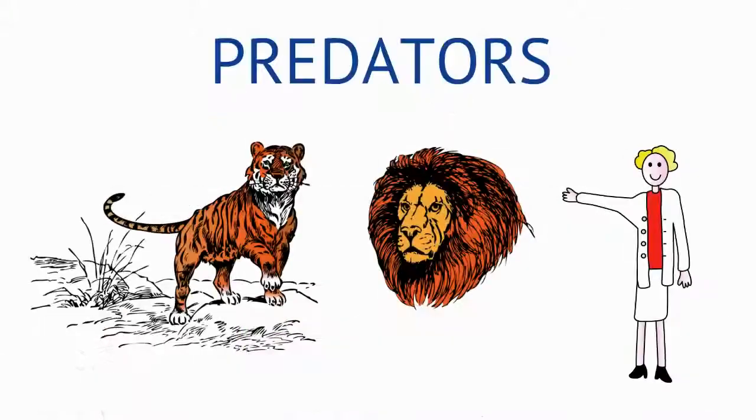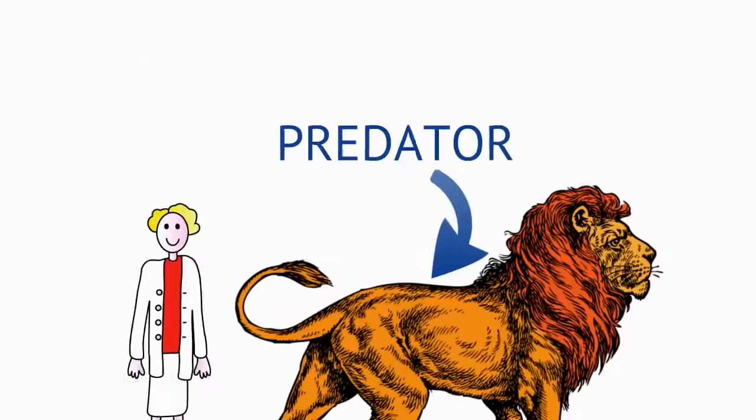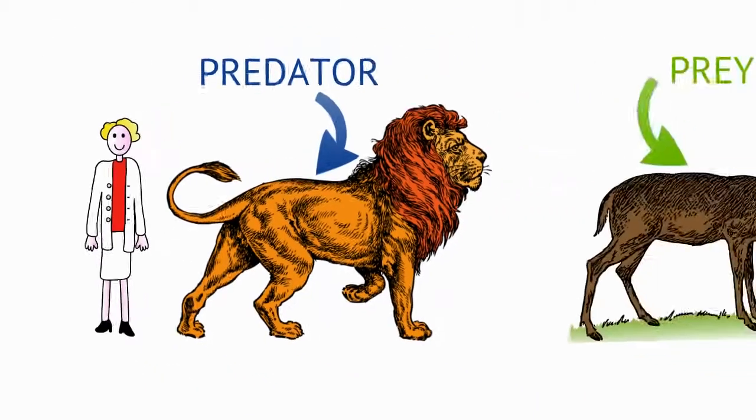Some animals are called predators. They hunt and kill other animals for food. The animals that are hunted and eaten by predators are called prey.